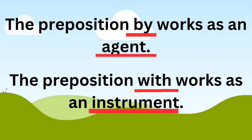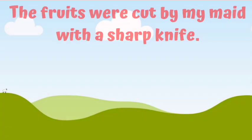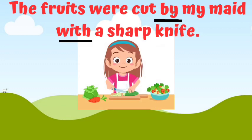The preposition by works as an agent. The preposition with works as an instrument. For example, the fruits were cut by my maid with a sharp knife. In this sentence, by is working as an agent whereas with works as an instrument.